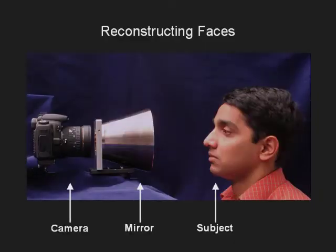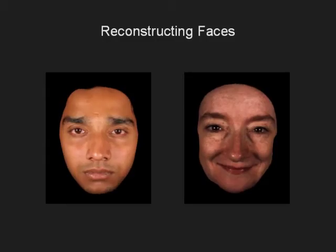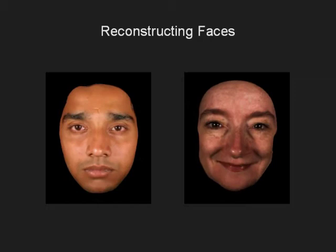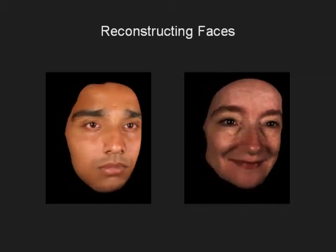Here we see a system that uses a conical mirror to capture within an image multiple high-resolution views of large objects such as faces. Observe that each feature is imaged at least twice along a radial line, allowing us to use stereo to obtain a 3D model. Remember, we needed to take only one image to do this.